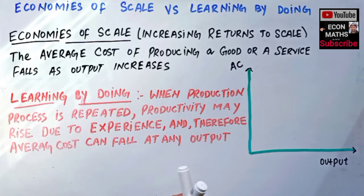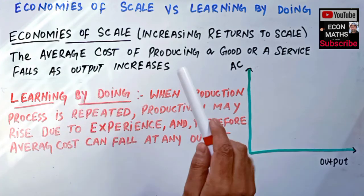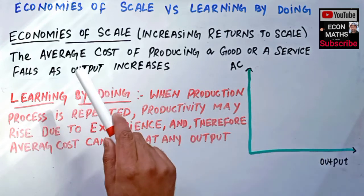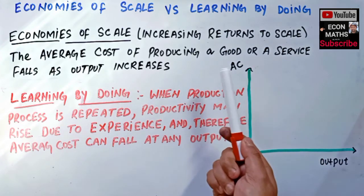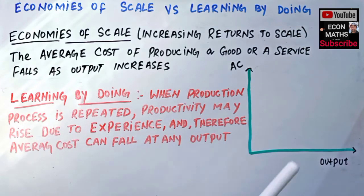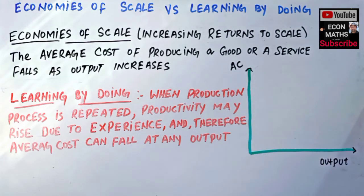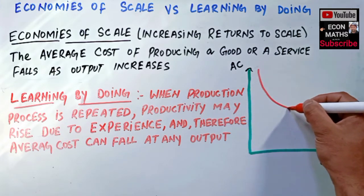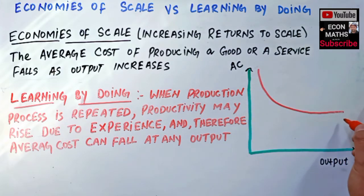In this video we will learn about the difference between economies of scale and learning by doing. By economies of scale we mean increasing returns to scale. It happens when the average cost of producing a good or a service falls as output increases. If we have a graph with output on the horizontal axis and average cost on the vertical axis, we can draw the average cost curve.